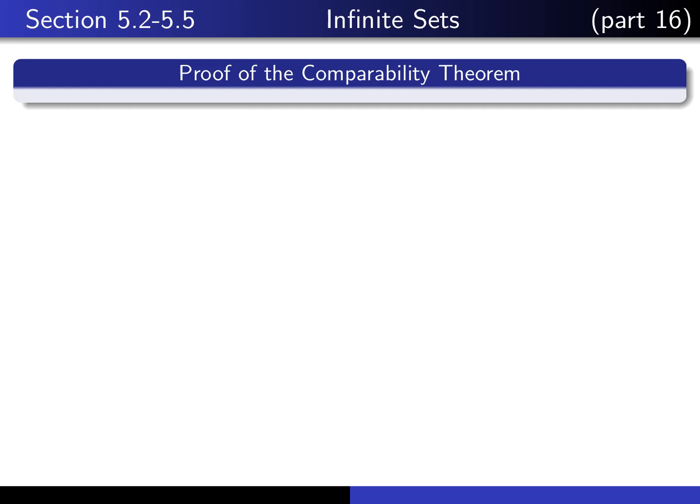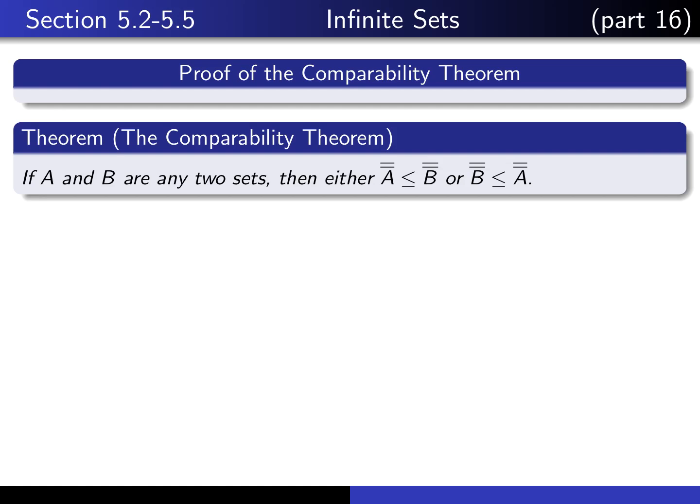This is part 16 in our series of lectures on infinite sets, and in this lecture I'm going to show you the proof of the comparability theorem. The comparability theorem states that if A and B are any two sets, then either there exists an injection from A into B, or there exists an injection from B into A.